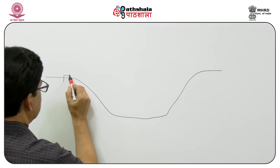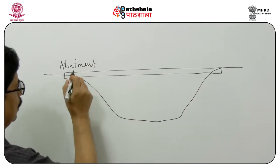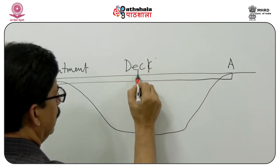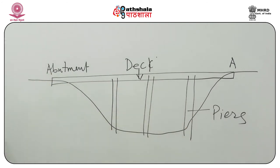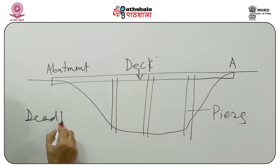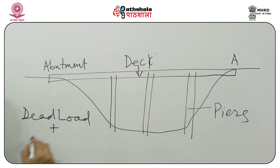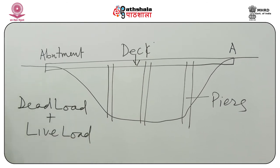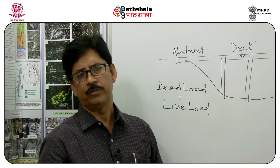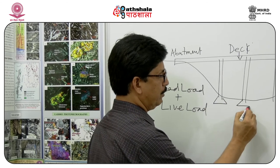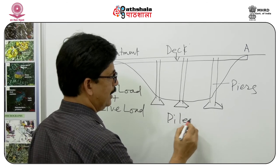Bridges have three important parts: abutments, where the bridge rests on the ground; the deck; and piers, depending on the length of the bridge. The total dead load comprises the construction materials and reinforcement, while the live load depends on the number and type of vehicles moving over the bridge. Civil engineers decide the type of foundation, and most of the time they go for pile foundation for important bridges.